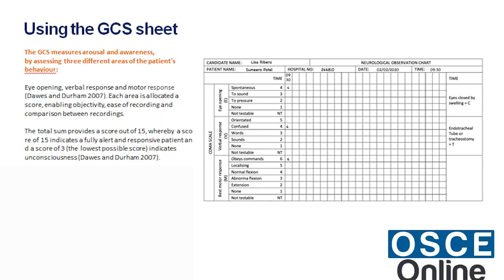The total sum provides a score out of 15, whereby a score of 15 indicates a fully alert and responsive patient. A score of 3, the lowest possible score, indicates unconsciousness (Dawes & Durham, 2007).